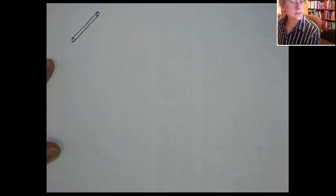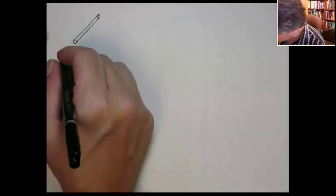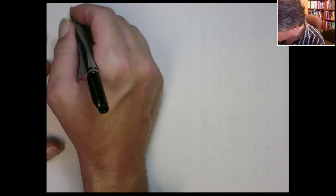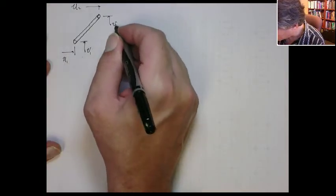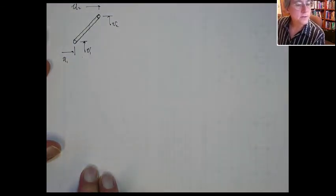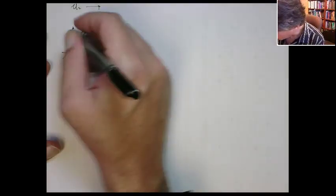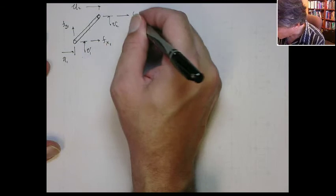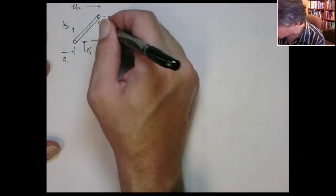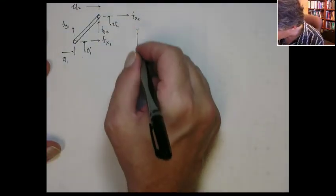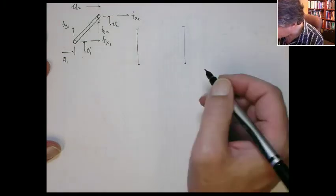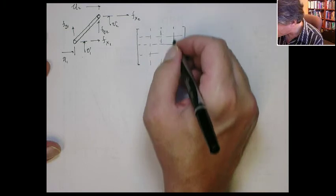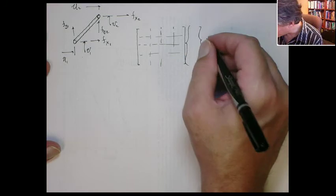There are two degrees of freedom per node. This one has a displacement U2 and V2. And then there are also forces in each one of those directions: a force in the y-direction at node 1, a force in the x-direction at node 1, a force in the x-direction at node 2, and a force in the y-direction at node 2. So each one of these stiffness matrices is actually a 4 by 4.